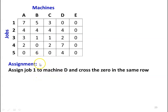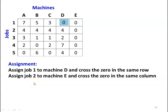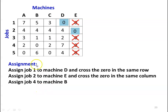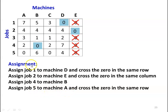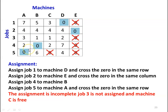Assign job 1 to machine D. So job 1 to machine D is assigned. Check the column vertically — there is no other zero. Assign job 2 to machine E. Cross all other zeros in the same column. The zeros in rows 3 and 4 of column E are deleted. Assign job 4 to machine B and assign job 5 to machine A. The remaining zero must be deleted as no assignment can be made there. The assignment is incomplete because job 3 is not assigned and machine C is not allotted any job.